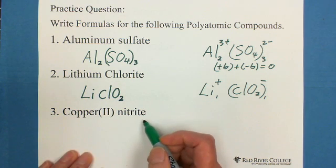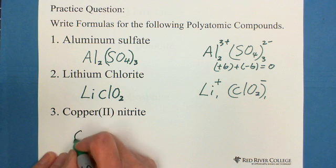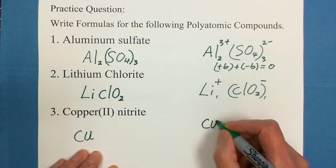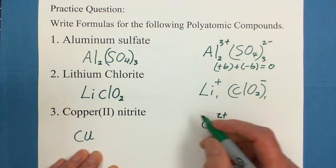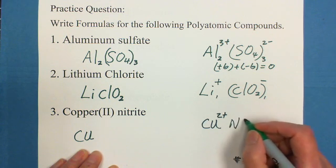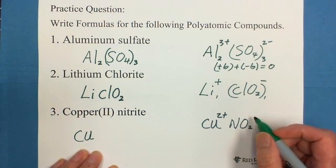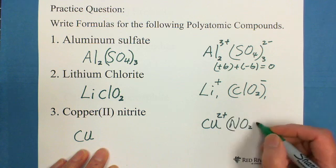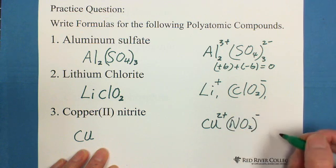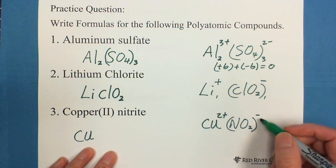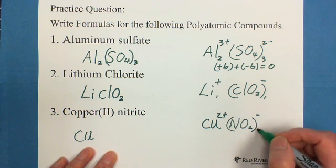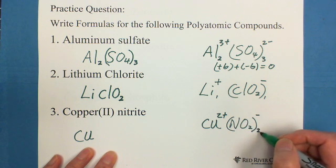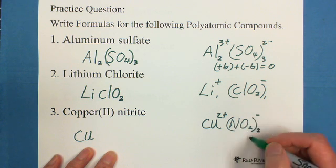The next is copper(II) nitrite. Copper is Cu. Copper(II) means copper with 2 positive charge. Nitrite is NO2, because NO3 is nitrate. So 1 less is NO2, which is negative 1. That's why we see the 2 for this corner means we need 2 nitrite ions. Each one is negative 1, total is negative 2 charge.